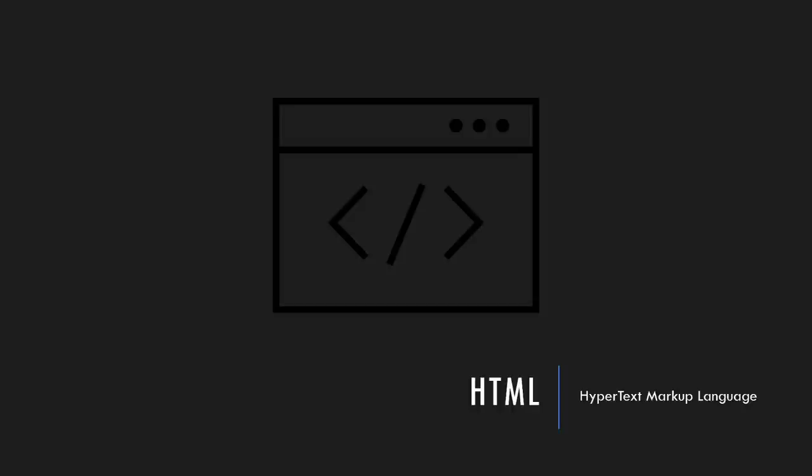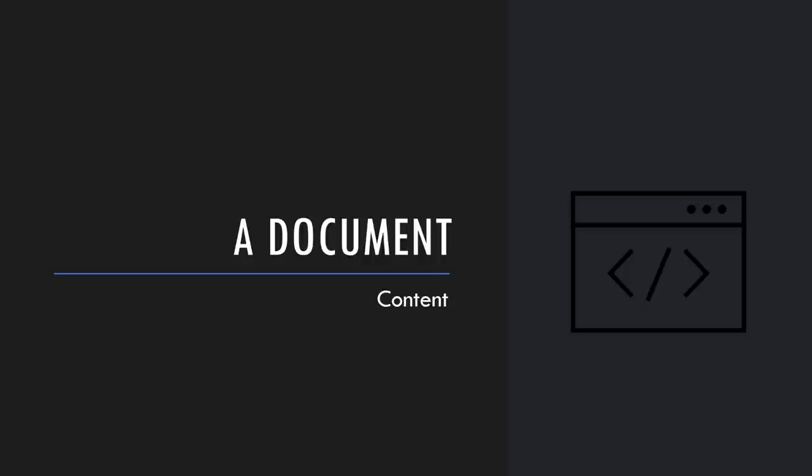Let's talk about hypertext markup language. In this section, we'll discuss the M and L in HTML - the H and the T come just a bit later. The first thing to understand is that when we talk about HTML, we're talking about documents. More specifically, text documents. That's why we're using Visual Studio Code, which is a text editor, and not something like Microsoft Word, which is a word processor. An HTML document is just a text document.